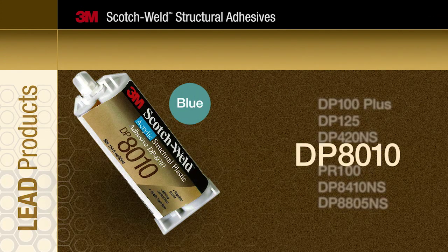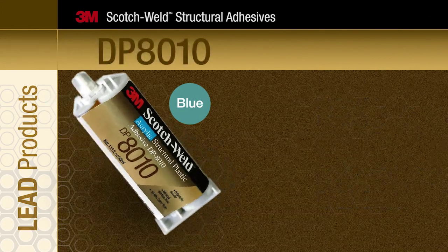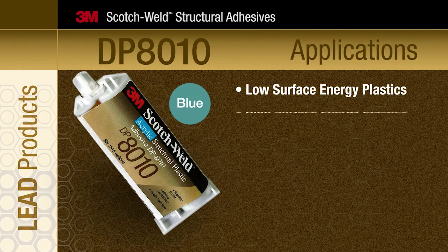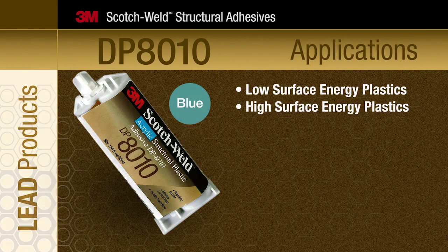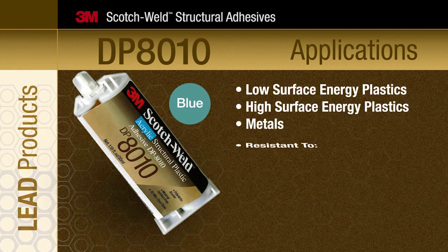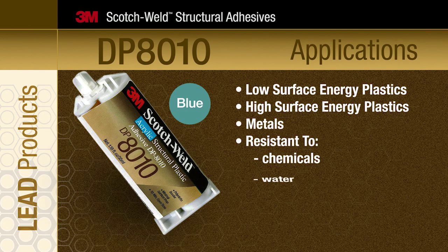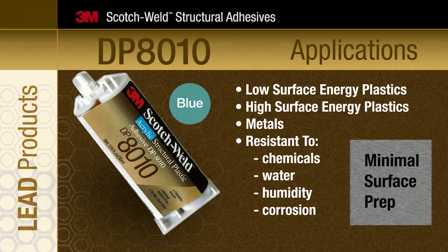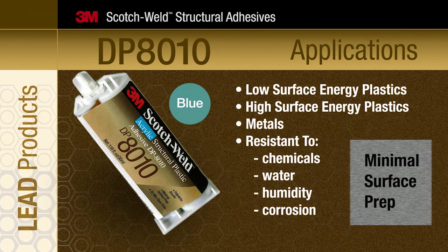3M Scotch Weld Structural Plastic Adhesives is uniquely formulated to work with low surface energy plastics as well as high surface energy plastics and metals. It's resistant to many chemicals, water, humidity and corrosion. That means minimal surface preparation or priming are required.